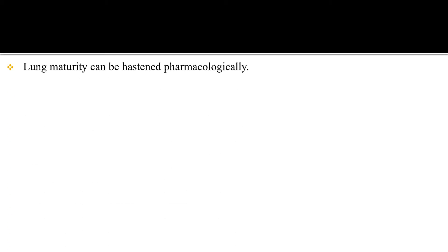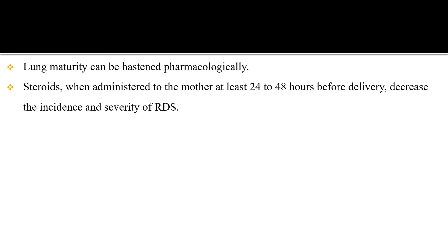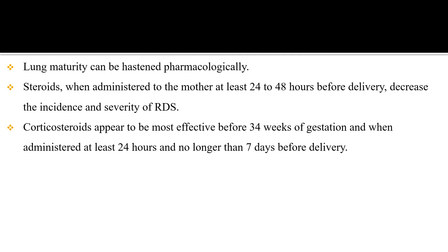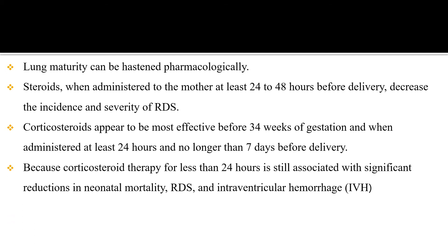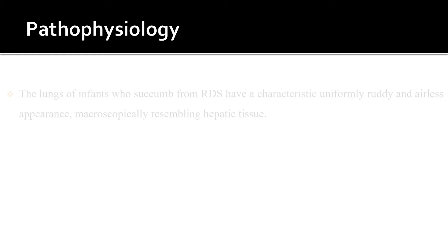Lung maturity can be hastened pharmacologically. Steroids, when administered to the mother at least 24 to 48 hours before delivery, decrease the incidence and severity of respiratory distress syndrome. Corticosteroids are most effective before 34 weeks of gestation when administered at least 24 hours and no longer than seven days before delivery. Even corticosteroid therapy for less than 24 hours is associated with significant reduction in neonatal mortality, respiratory distress syndrome, and intraventricular hemorrhage.